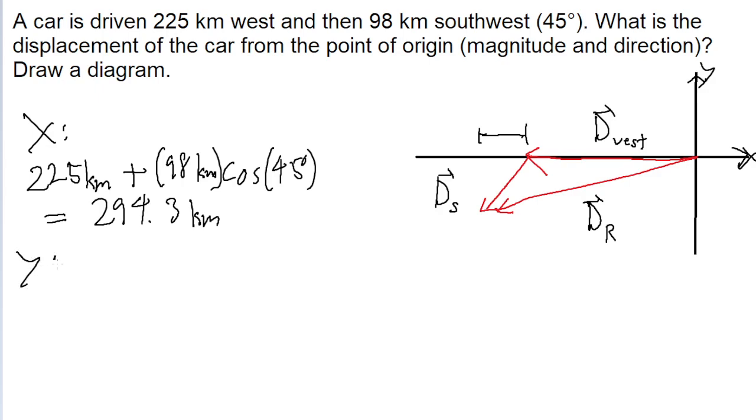Now let's do the same thing for the y component. During the first leg of the journey, the car is not traveling south or north at all. So the 225 kilometers component just can be ignored when we're looking at the y.